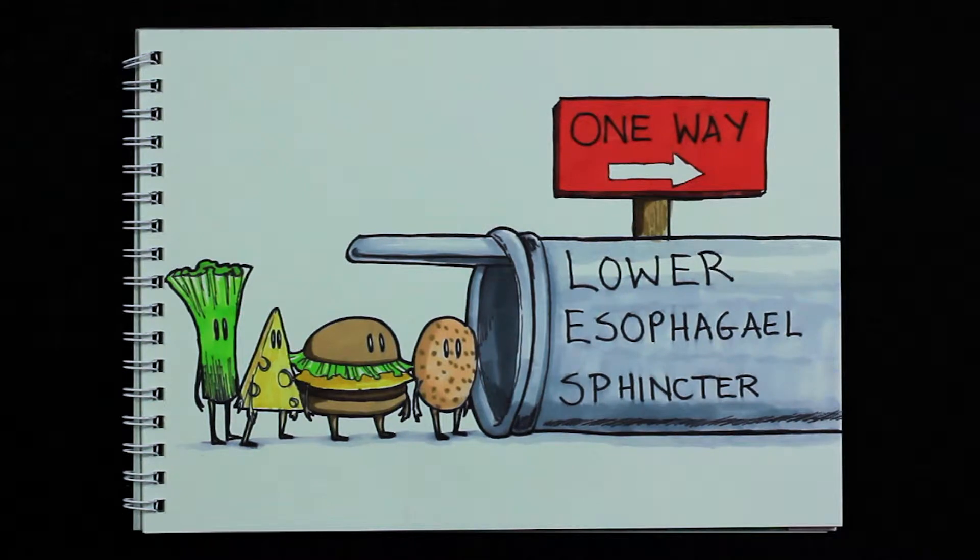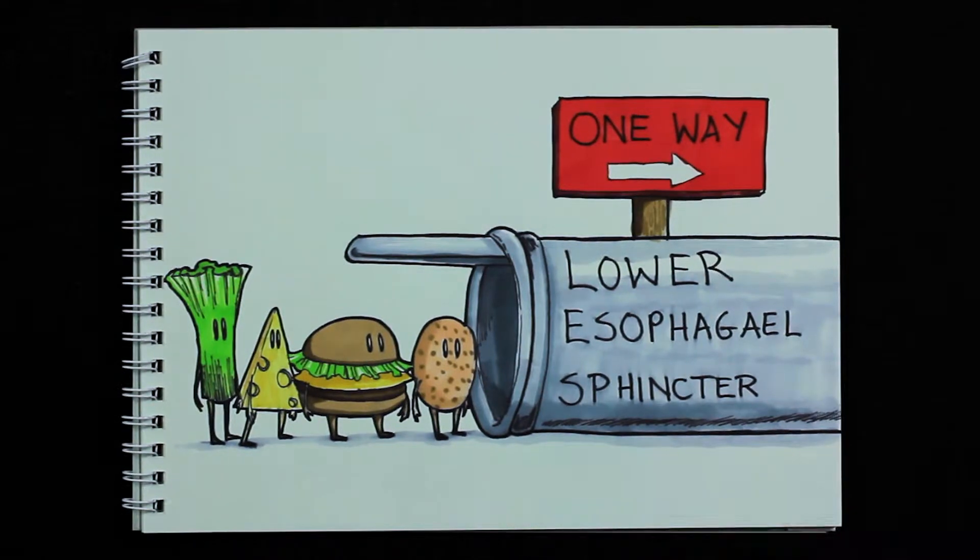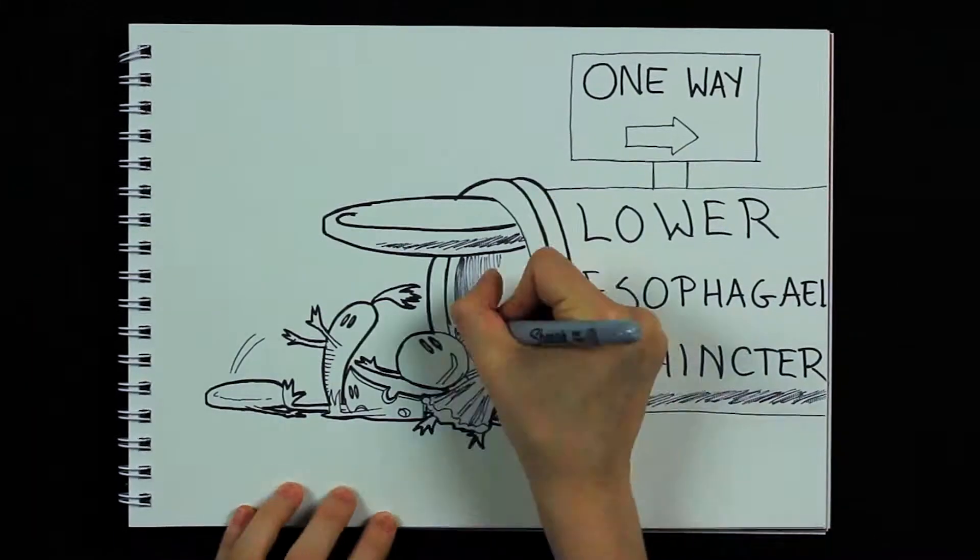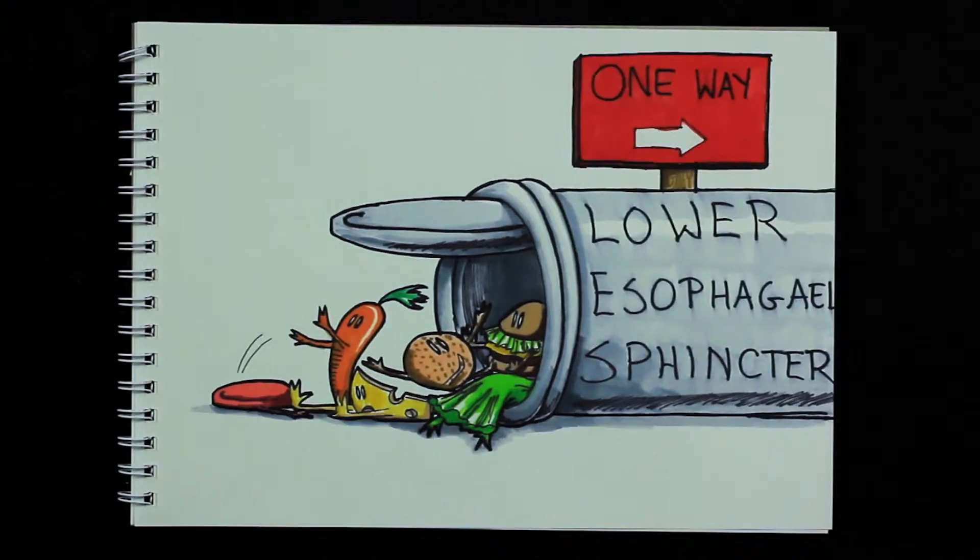Now, the LES is supposed to be a one-way valve, keeping food from traveling from your stomach back up into your esophagus. Sometimes, however, this valve malfunctions, and stomach acid and food will make their way back up your esophagus, causing heartburn.